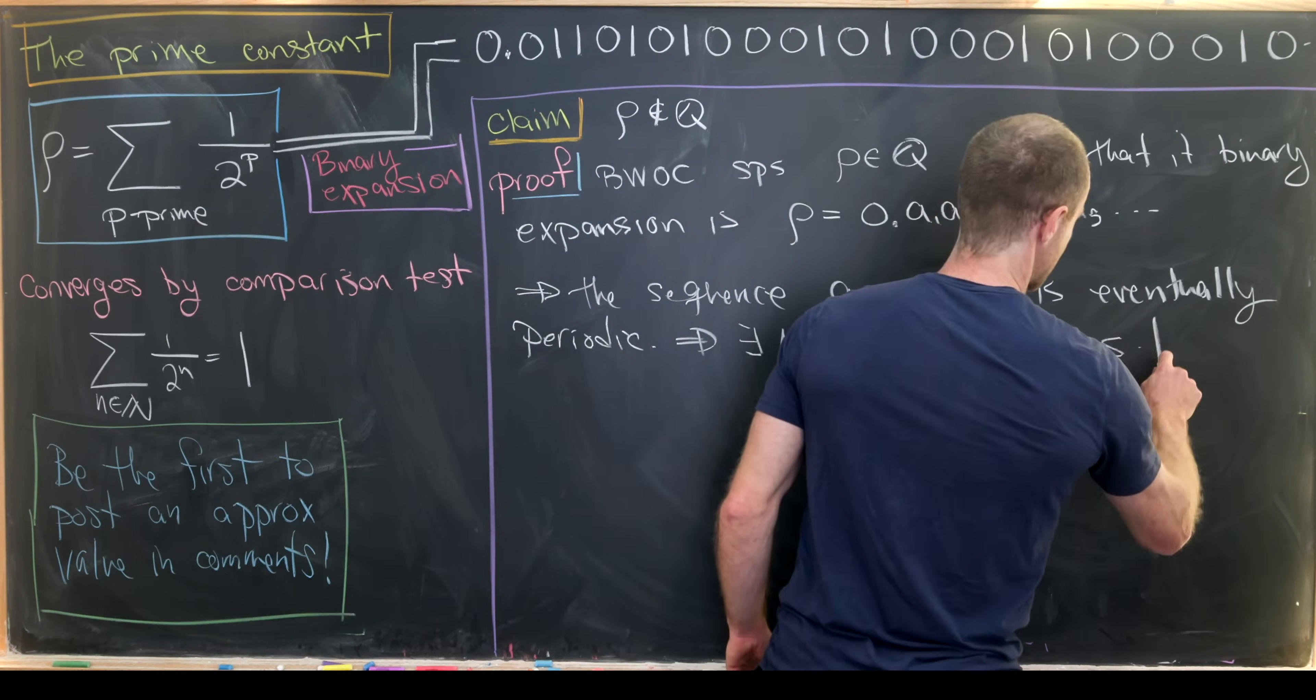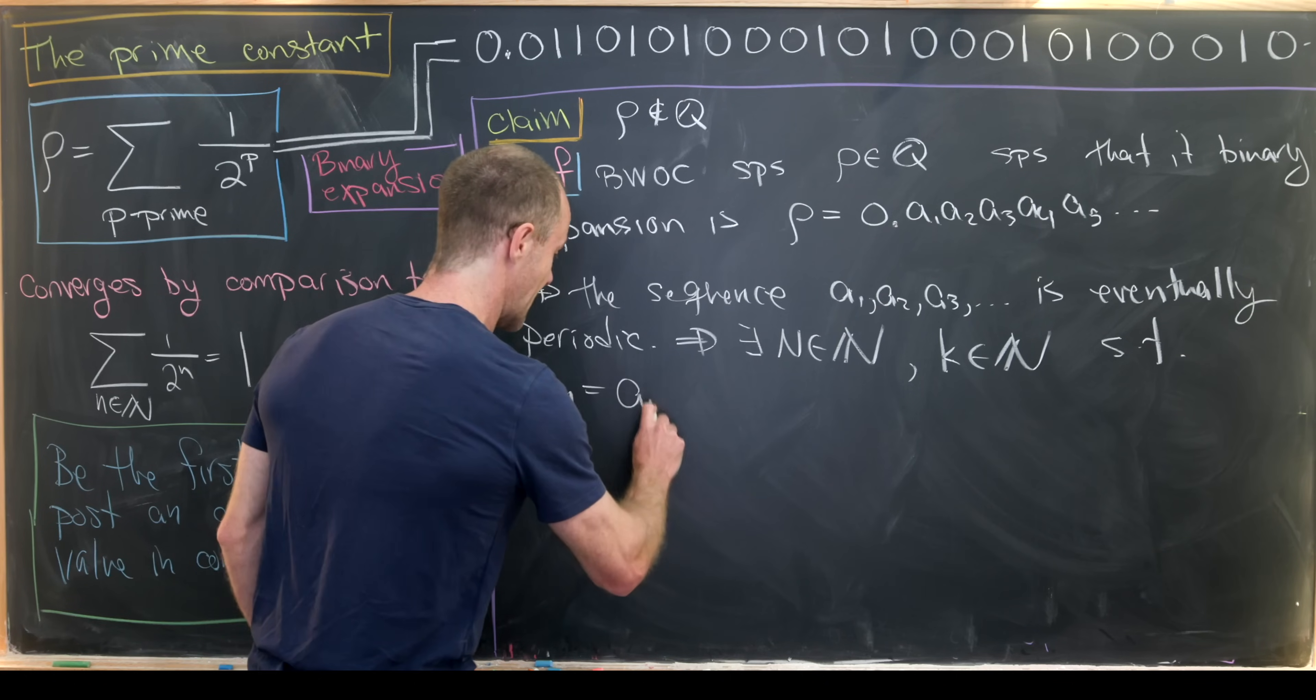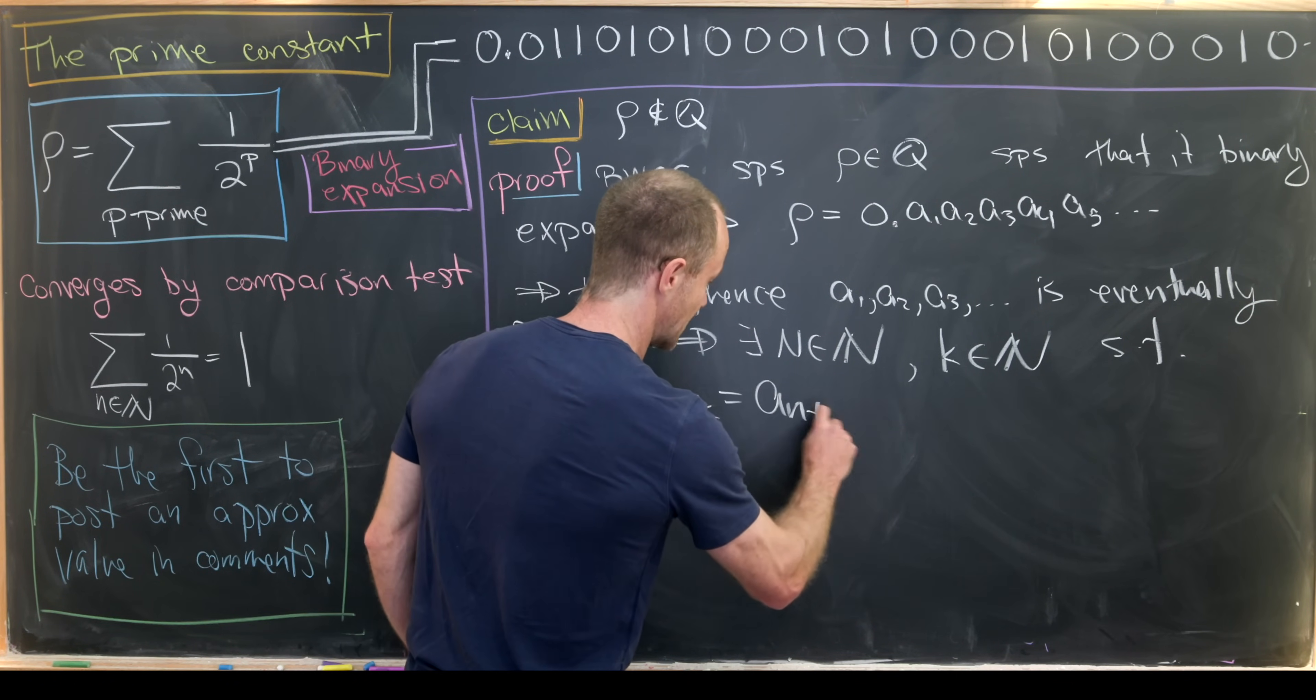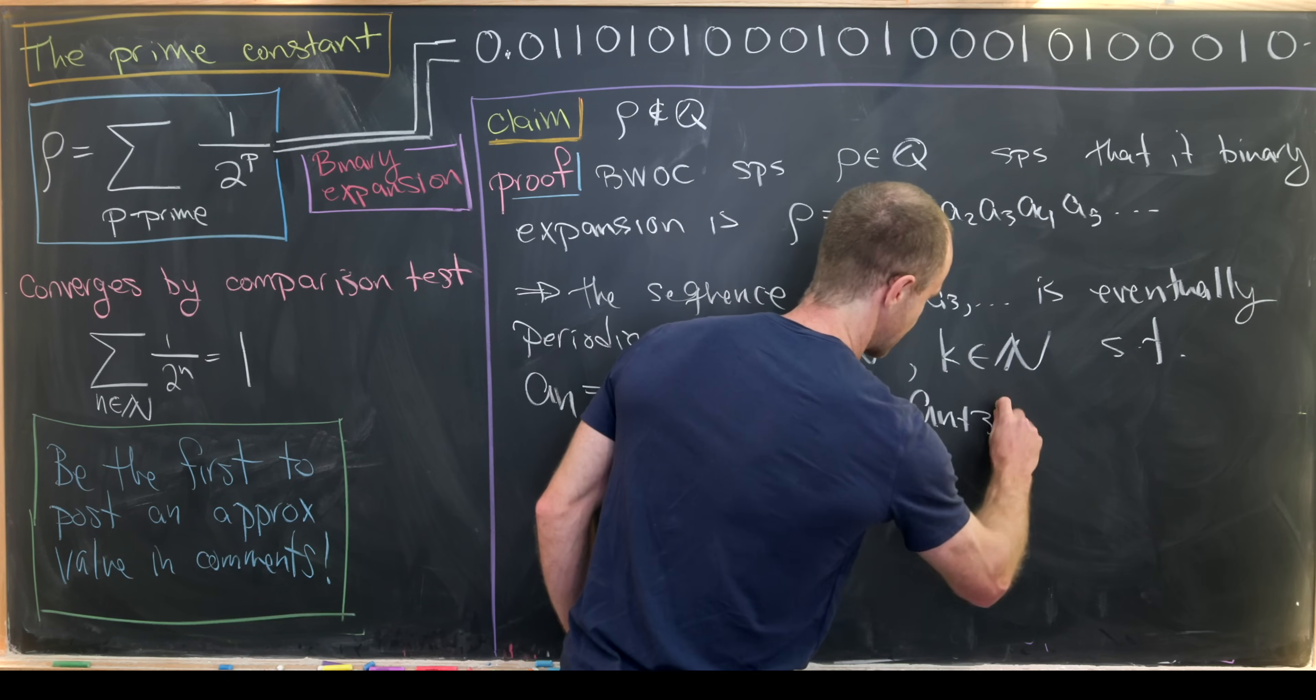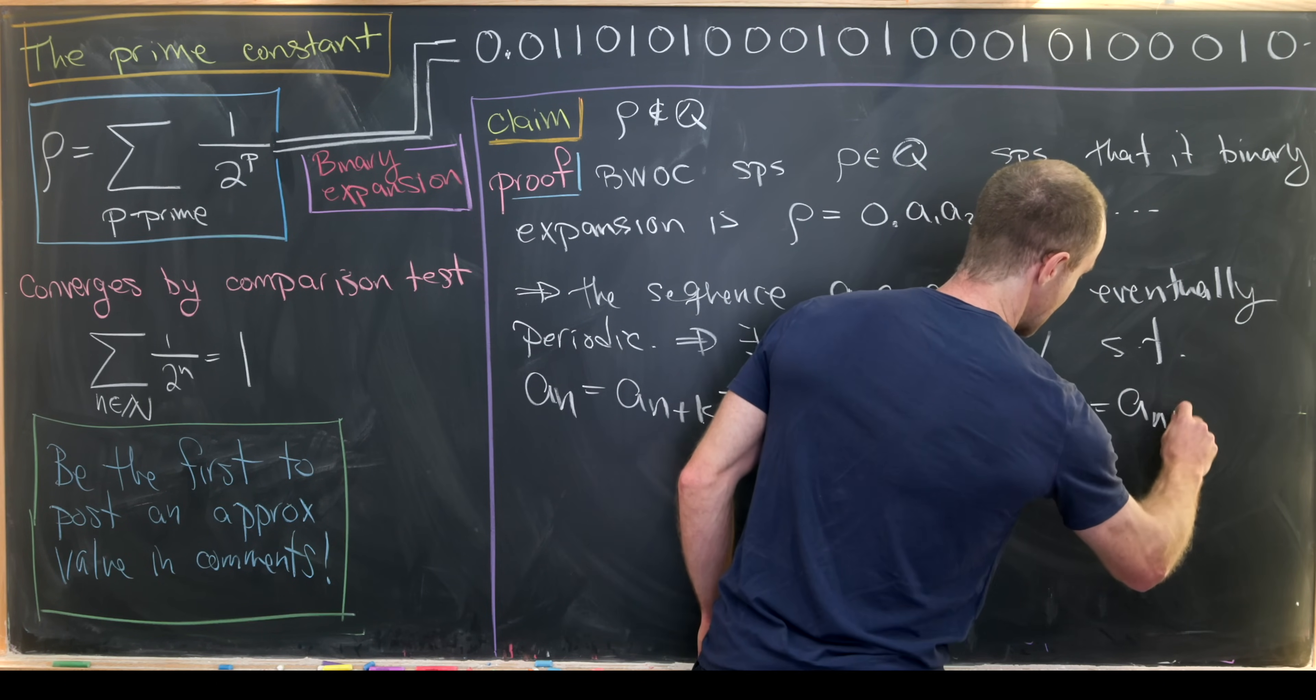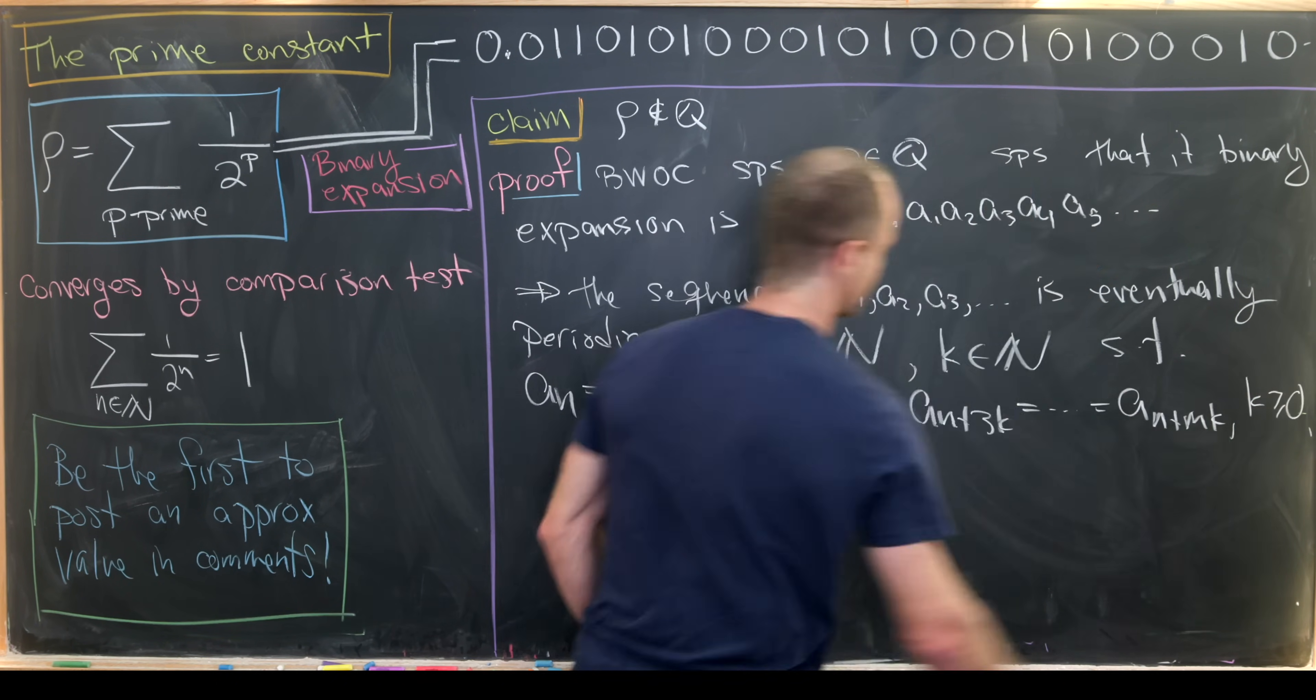Such that a sub n is equal to a sub n plus k, which is equal to a sub n plus 2k, which is equal to a sub n plus 3k, and so on and so forth. So that's a sub n plus mk for all k bigger than or equal to zero.